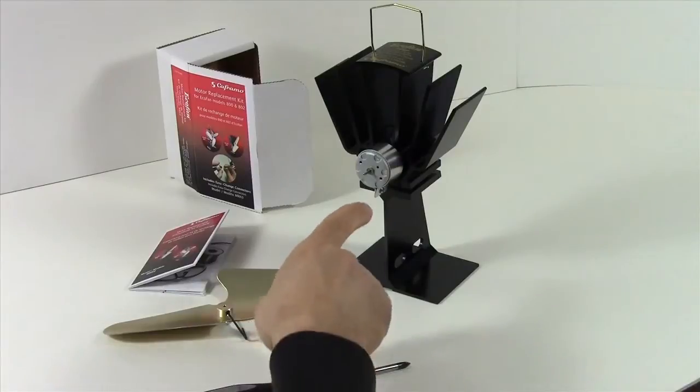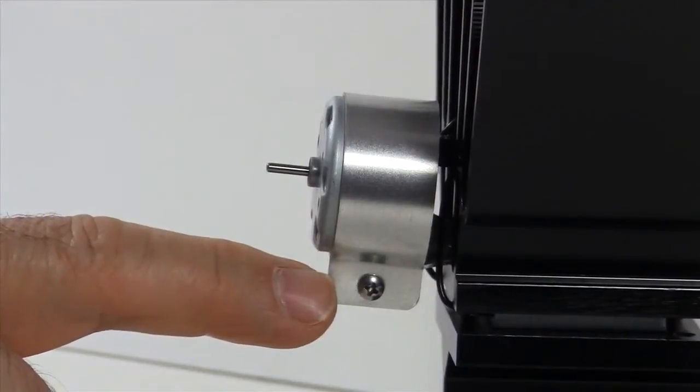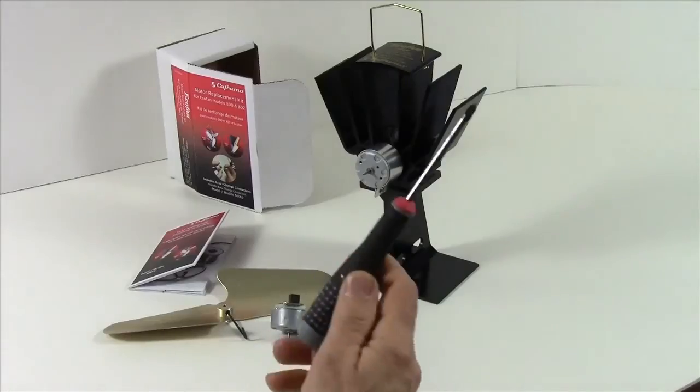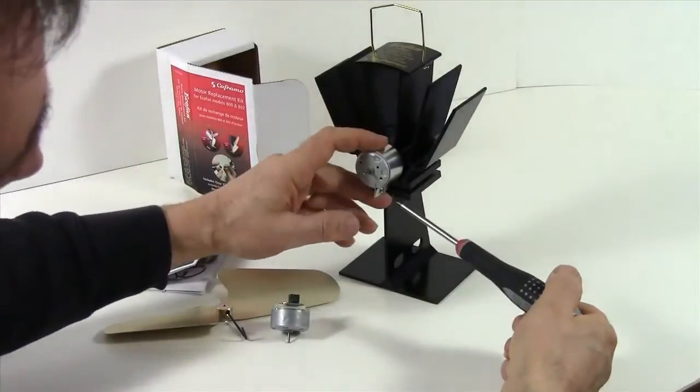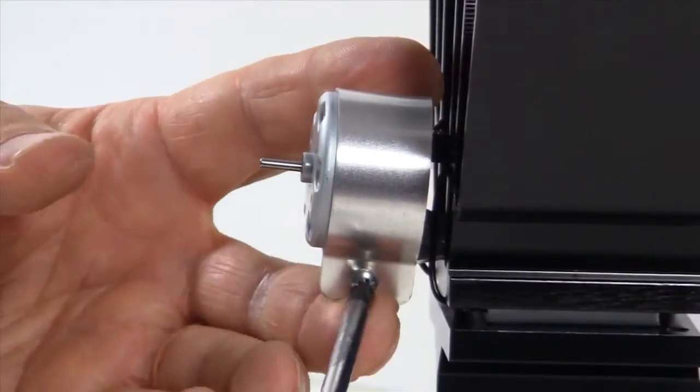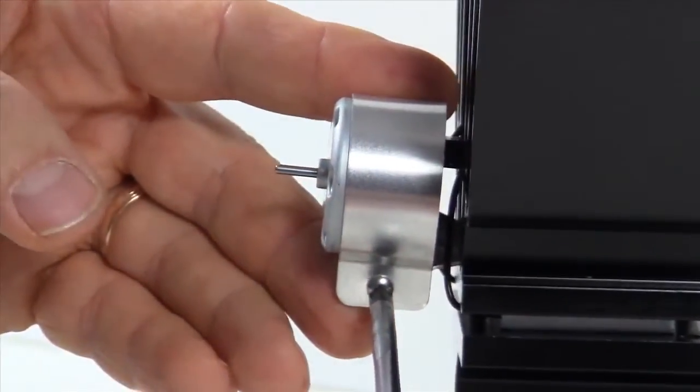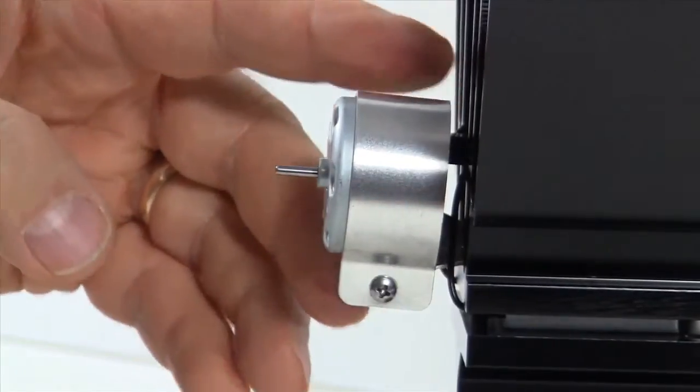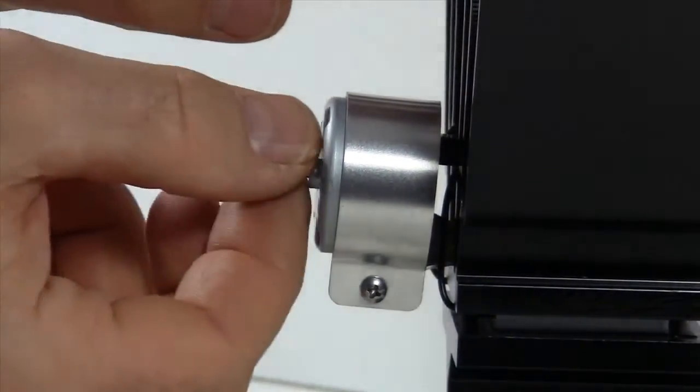Next, we have to loosen the screw on the motor bracket which holds the motor in place. We're going to use our Phillips screwdriver and loosen the screw. Now simply slide our motor out.